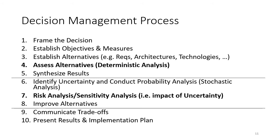The handbook describes a 10-step process for decision management, which can be broken into three phases. Steps one through five are a first pass at the decision, typically done using a deterministic process — not taking into account uncertainty or probabilities. Step one is to frame the decision, step two is to establish the objectives and measures, and step three is to establish the alternatives. These first three steps set things up so we understand what decision we're trying to make and how we're going to measure it.